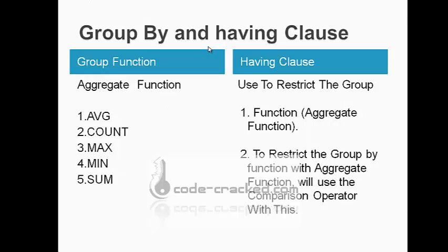Suppose you have a company named XYZ divided into three groups: Delhi, Goa, and Haryana. You want to find out who earns the maximum salary in all departments. You use the GROUP BY clause — the company will be divided into groups and gives you the maximum salaries for particular departments. You can also find the minimum and sum of salary and the total number of salaries for particular departments.